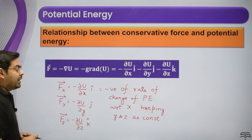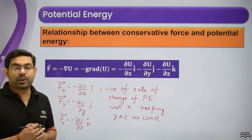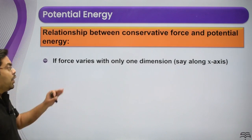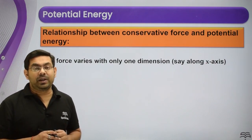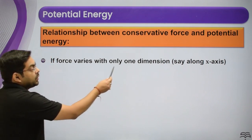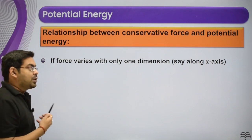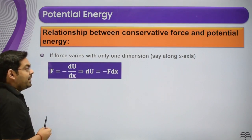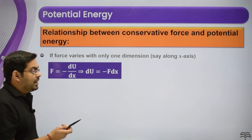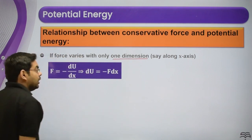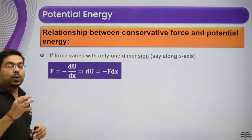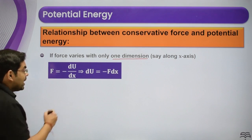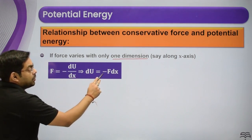If force varies only in one dimension (say x), then the relation simplifies to F = -dU/dx. This means dU = -F dx.